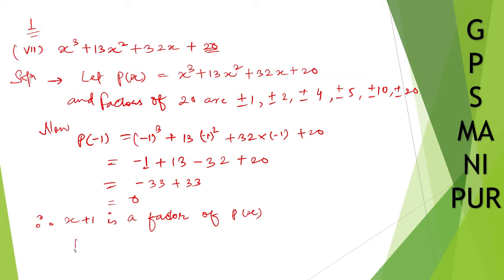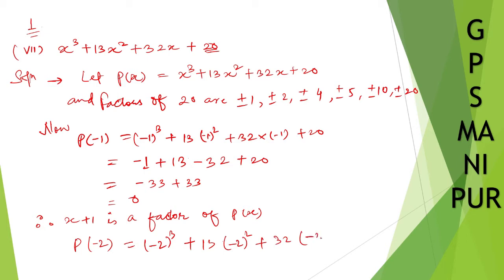Let us take p of minus 2, because if I take 1 or 2 here, they will be all plus, so let us take minus 2 and check. So, minus 2 whole cube plus 13 into minus 2 whole square plus 32 into minus 2 plus 20.